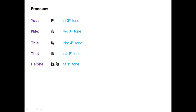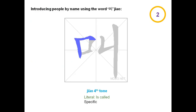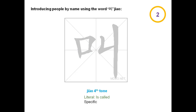And he, or she: 他, the first tone. Now, 叫, the fourth tone, literally means 'is called.' It is a specific word, so when using this word, you are specifically asking for what somebody is called. 叫.